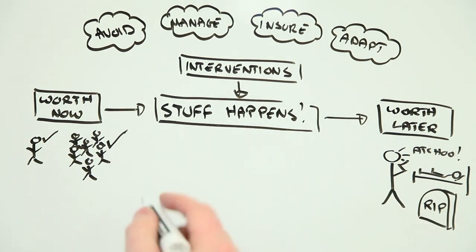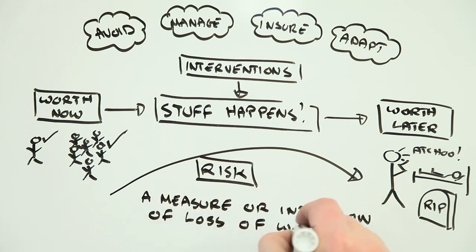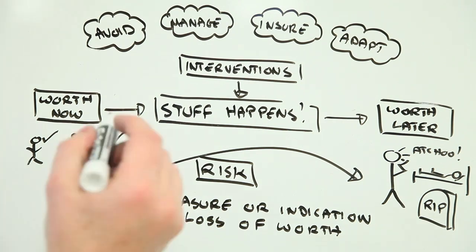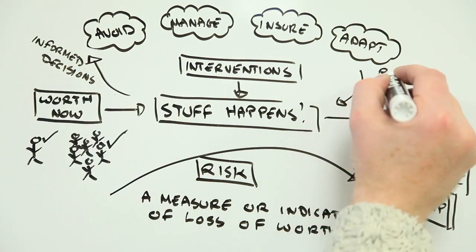To minimize this loss of worth we need to know what contributes to ill health, how big an effect we're looking at and how best to intervene. And this is where understanding health risk, that number that indicates the probability of a specific health impact occurring, is so important.